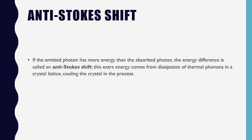Stokes shift is due to loss of energy — the electron absorbs the energy, moves to a higher state, then loses some energy to the surroundings, and that is why we observe a peak at higher wavelength or lower energy. But anti-Stokes shift is just the reverse — in this concept, extra energy is present. You are giving lower energy but getting higher energy out.